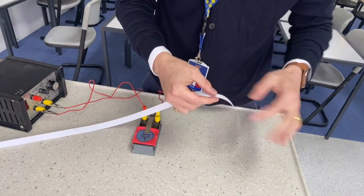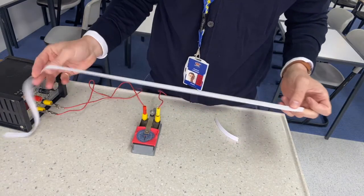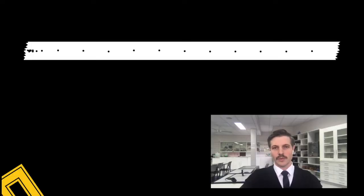I'm going to start down there and end up down the end. So what we want to do is figure out how, using dots on ticker timer, we can determine velocity without using a velocity-time or distance-time graph like we used in the previous activity.